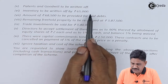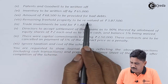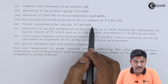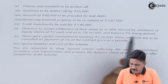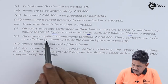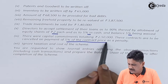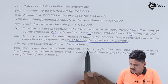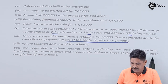Inventory is to be written off by Rs.65,000. An amount of Rs.68,500 is to be provided for bad debts. Remaining freehold property is to be revalued at Rs.3,87,500. Trade investment is to be sold at Rs.1,40,000. Directors are to accept settlement of their loan: 90% by allotment of equity shares of Rs.2 each, 5% in cash, and the balance 5% being waived. Capital commitments totaling Rs.2,50,000 are to be cancelled on payment of 5% of the contract price as a penalty. Ignore taxation and cost of the scheme.